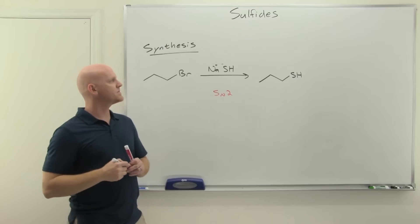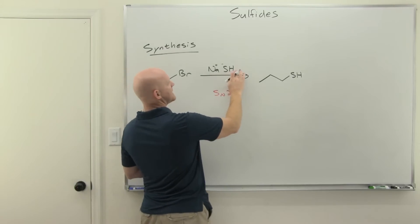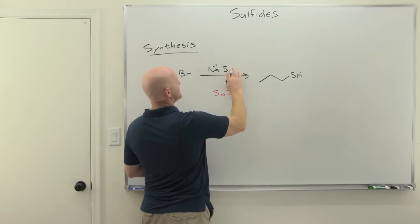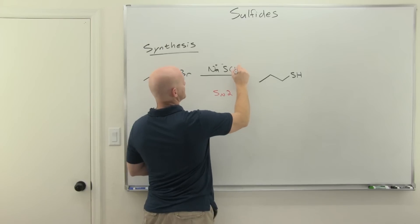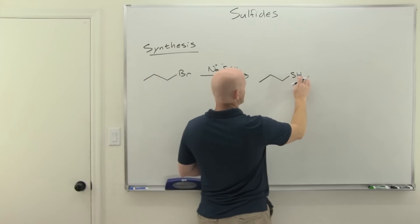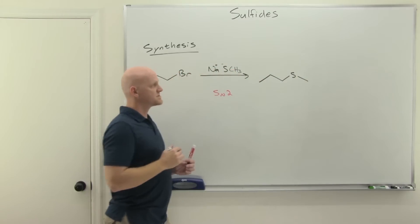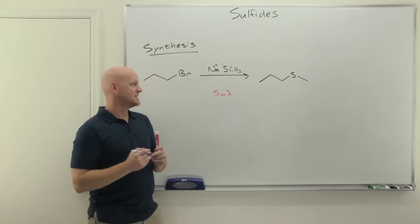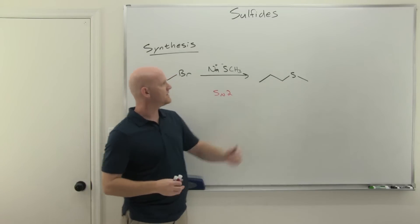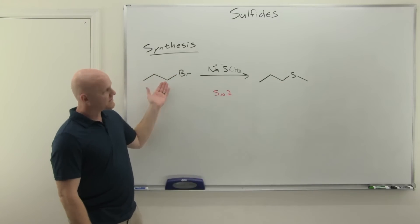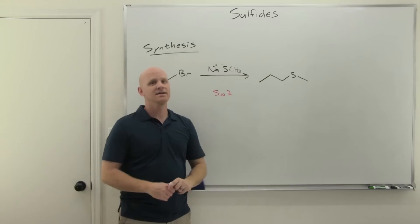Well, the only thing we want to change here to end up with a sulfide is to replace that hydrogen on the nucleophile with just another carbon chain, like a methyl group or an ethyl group or something like this. And that way on the product side, you just attach a CH3, or I should say, it's already there. So you formed this lovely new bond here.